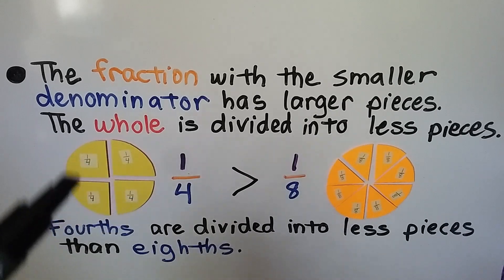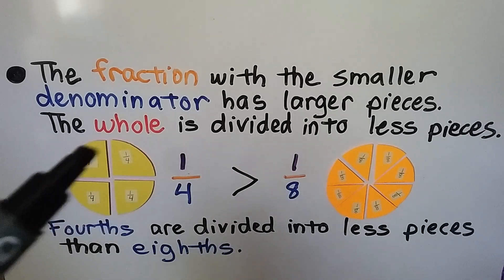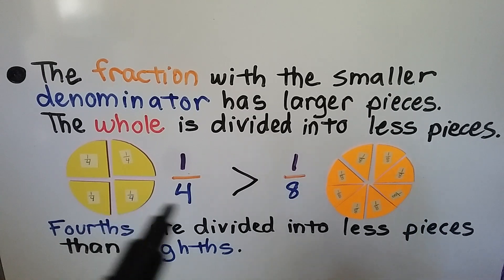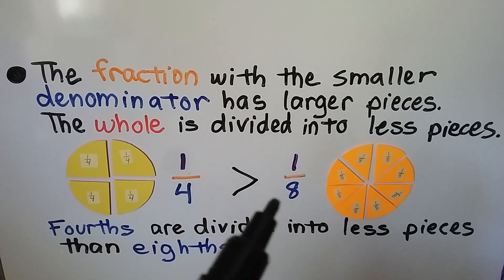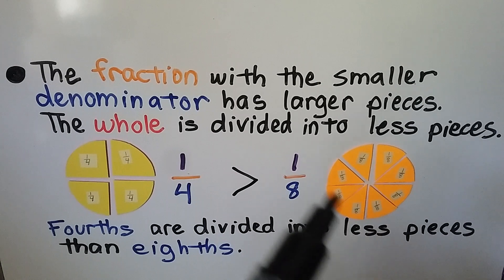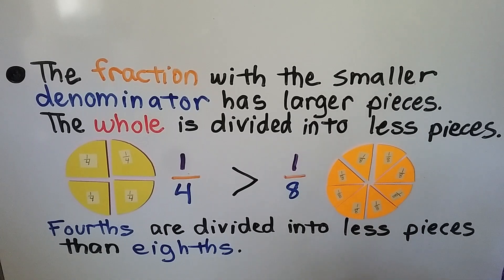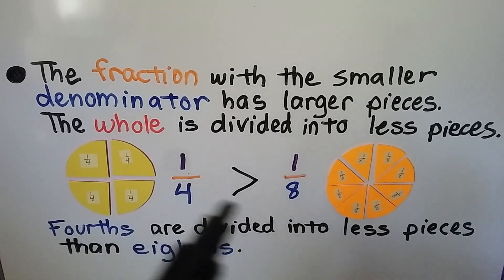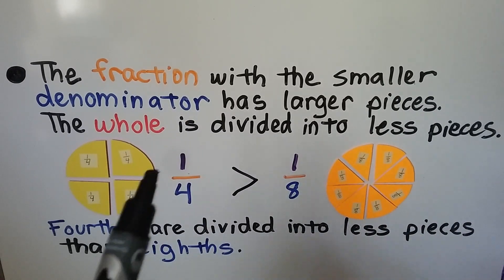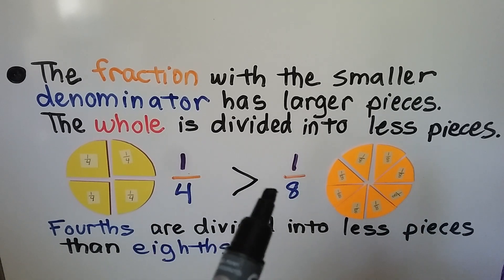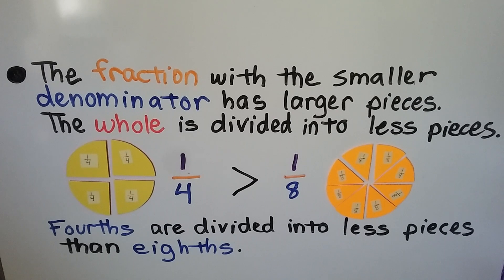Here we have fourths — a whole circle split into fourths. One-fourth, one of the pieces, would be greater than one-eighth. This whole circle is split into eight pieces. One-eighth is not as large. One-fourth is greater than one-eighth. This is a lower number for the denominator, so it's greater. Fourths are divided into fewer pieces than eighths.